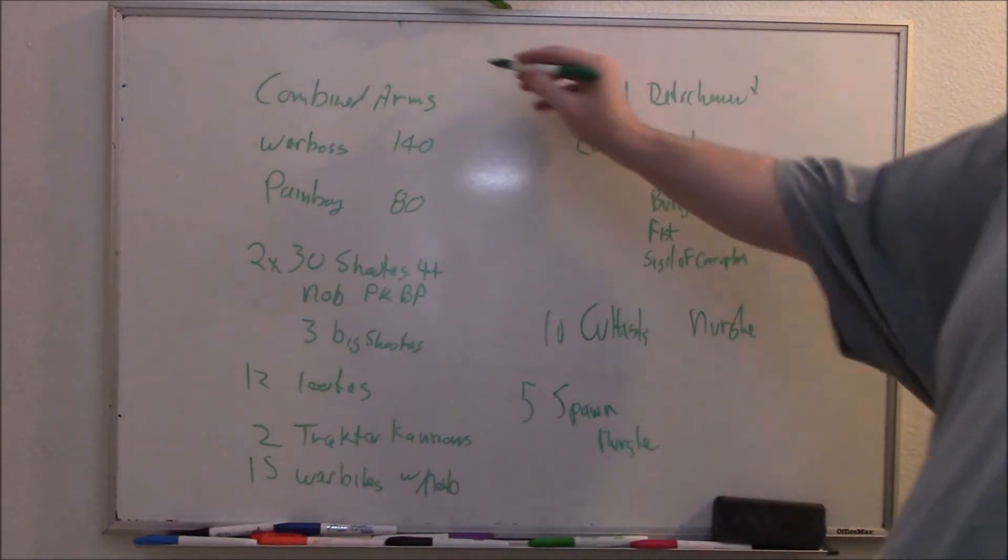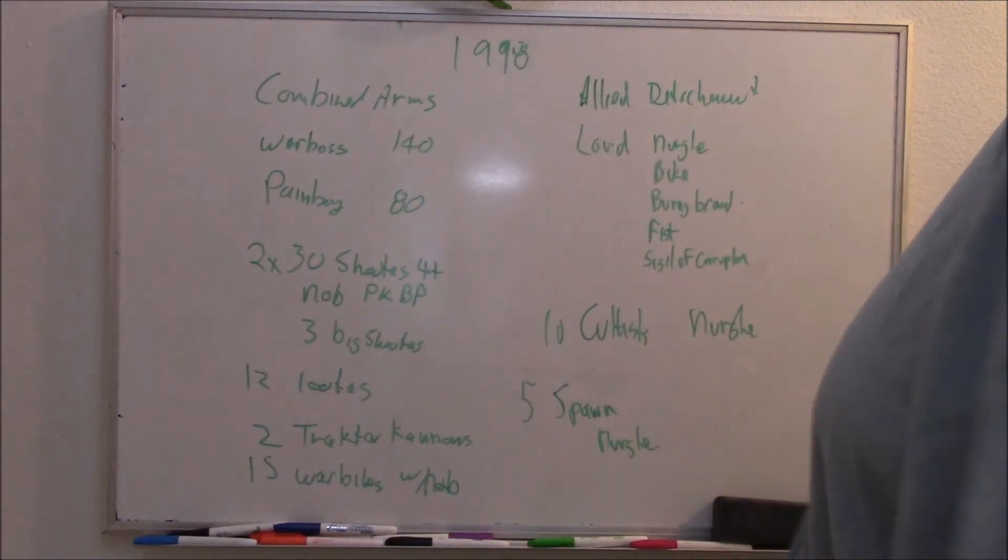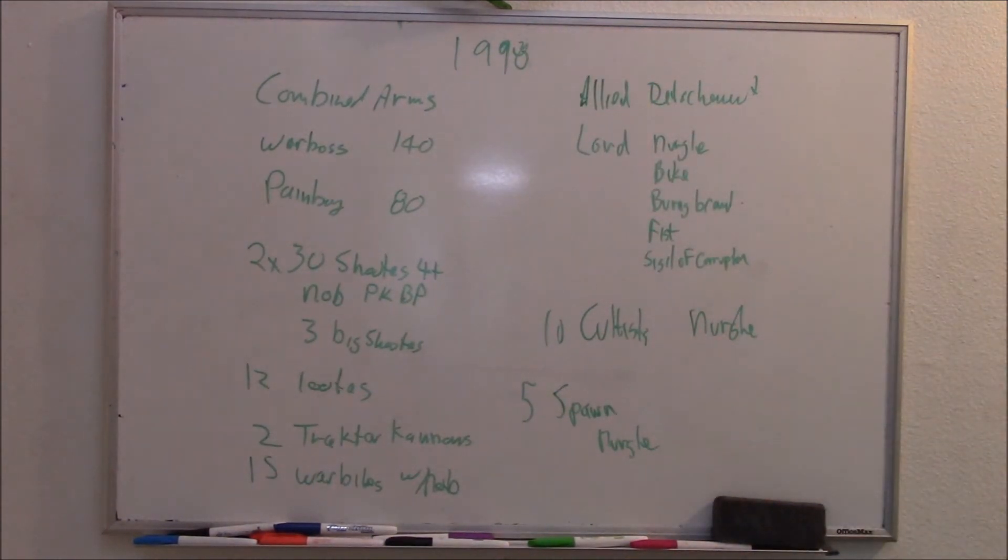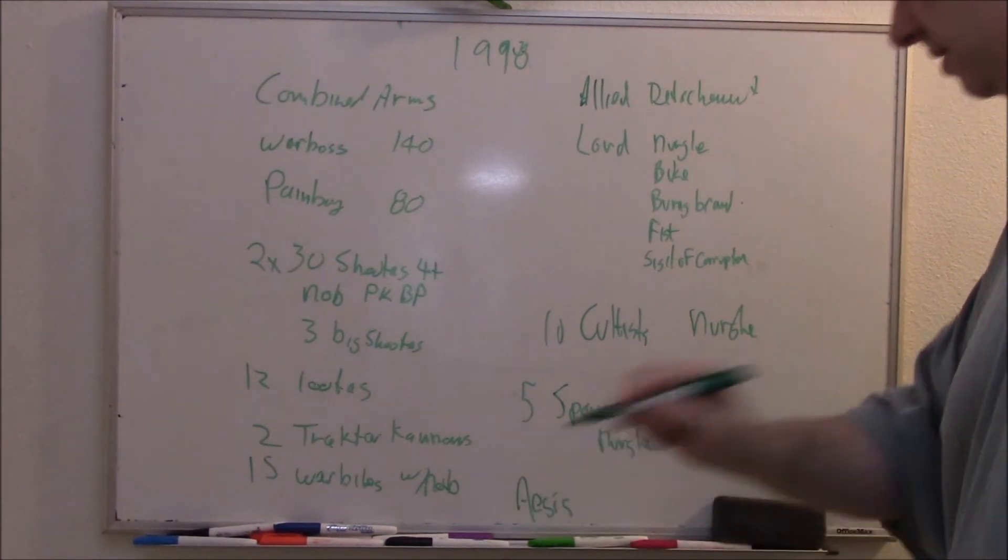So here's your list. This is 2,000 points. Actually, it's 1,998 points like this. And this is the basic, and of course Aegis. I almost forgot Aegis. Don't forget that. It does have an Aegis in this list, too.